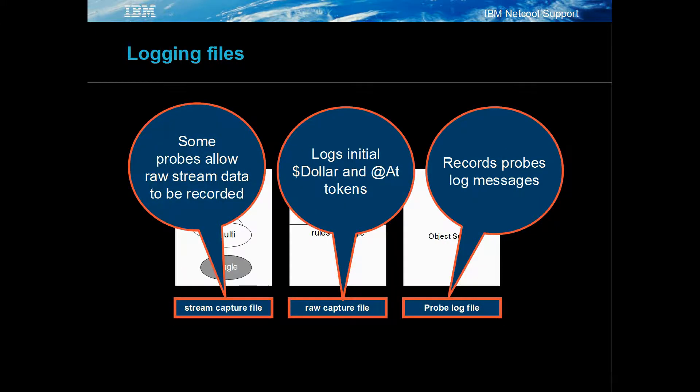There are three main common log files. The stream capture file captures the raw streaming data seen at the probes' heads; it is only available on some probes and can be replayed using netcat. The raw capture file captures the dollar and dat tokens on initialisation and can be replayed using the standard input probe. The probe's log file can log probe processing details at various logging levels.